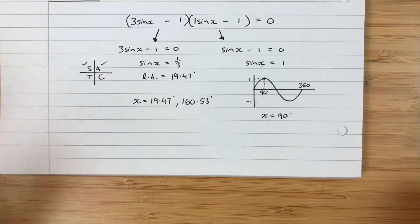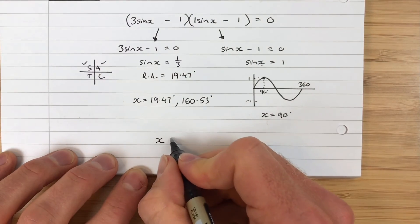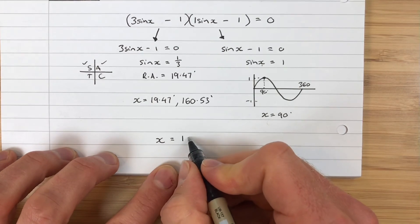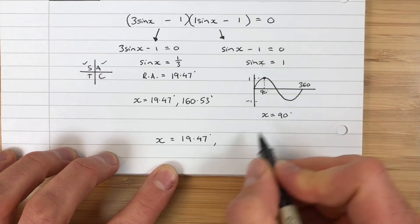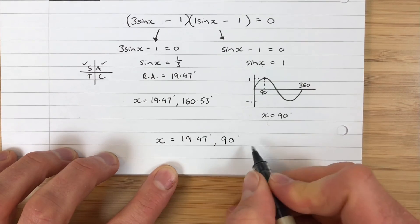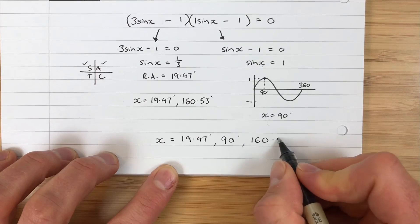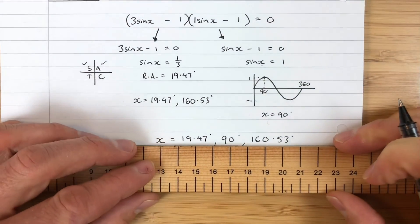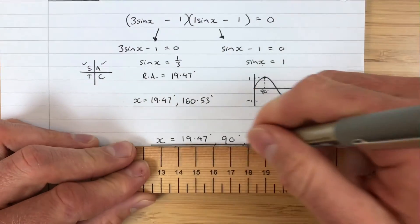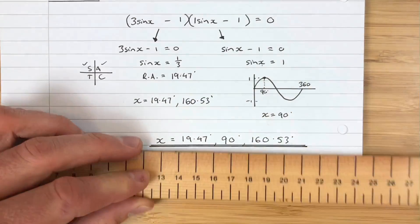So the last thing we have to do to finish this is just write out our solutions in ascending order: x = 19.47°, then 90°, then 160.53°. And we have now listed all the possible solutions that lie between 0 and 360, i.e., all the possible solutions which are in one rotation.